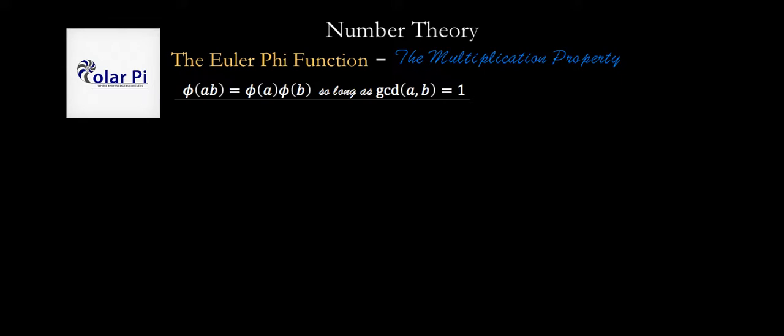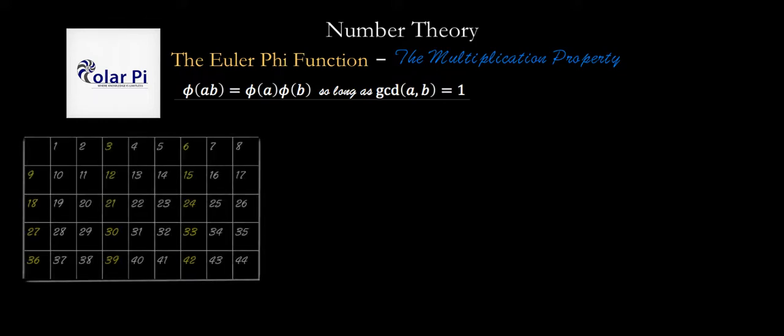Now, suppose that we're trying to do phi of 45, phi of 45. Now, we know 45 can be written as 9 times 5, and we know that 9 and 5 are relatively prime. So, that's what we're going for. We're going to try and do phi of 45 by doing phi of 9 times phi of 5, but we're trying to get a feel for why this property works the way that it does.